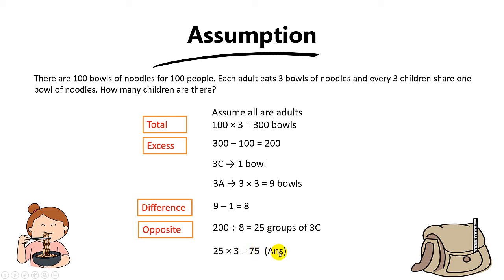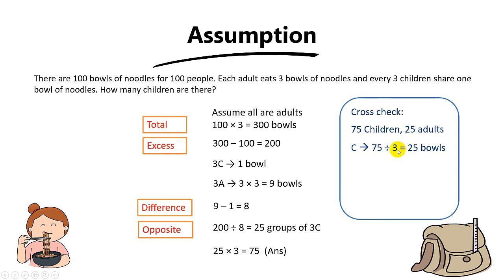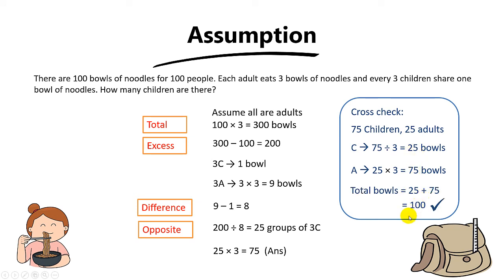To find the total number of children, take 25 times 3, giving you 75 children. To double-check: if there are 75 children, then there are 100 minus 75 equals 25 adults. Children's bowls: 75 divided by 3 equals 25 bowls. Adults' bowls: 25 times 3 equals 75 bowls. Total: 25 plus 75 equals 100 bowls — exactly what the question states.